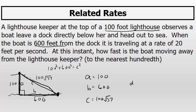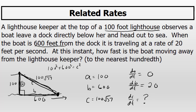The only rate we've been given is the change in side B with respect to time — that's 20 feet per second. Side A is not changing as time passes because the lighthouse is always 100 feet high. Side C is changing, and the rate of change of side C is the rate at which the boat is moving away from the lighthouse keeper herself. Side C's rate of change is what we're trying to find.